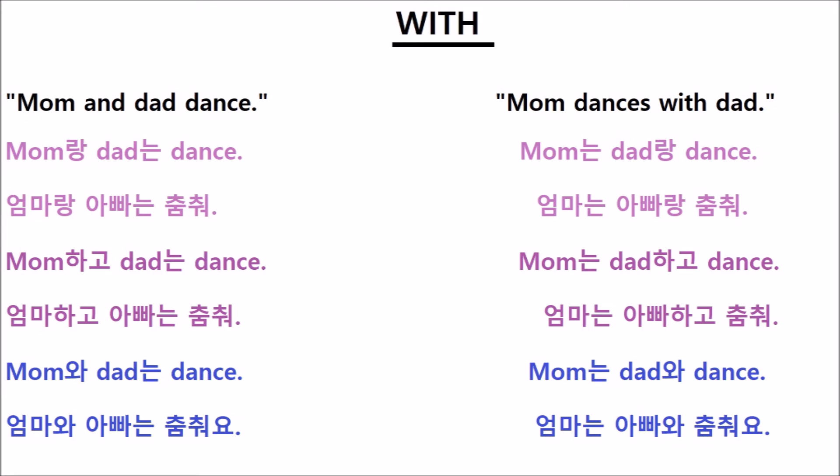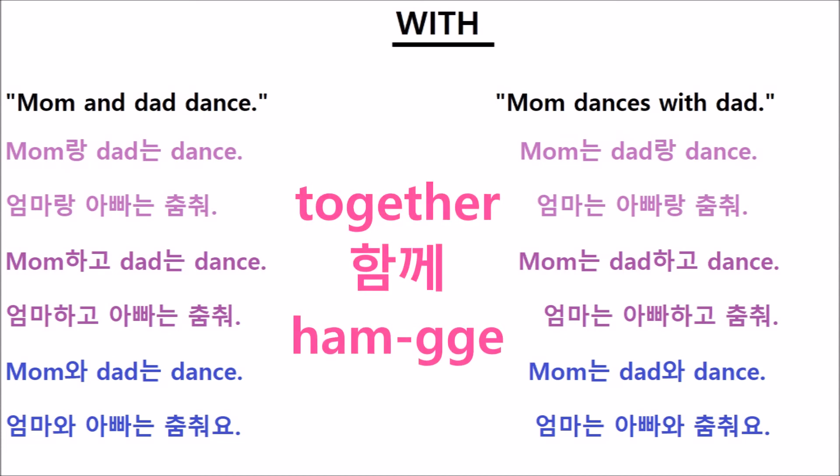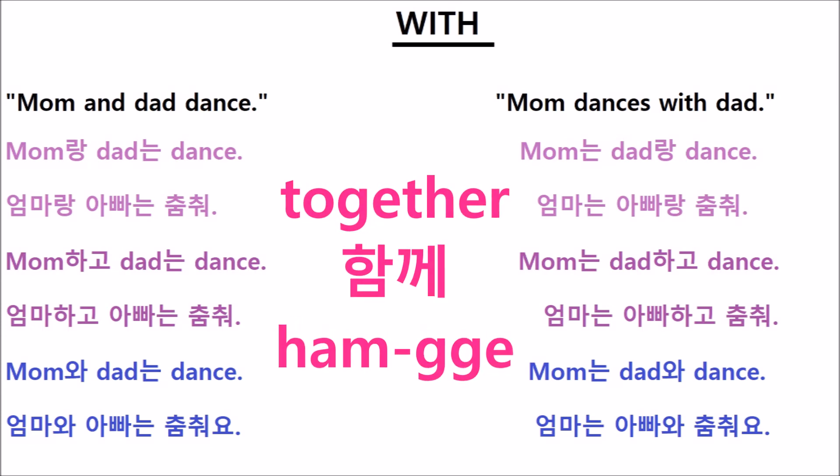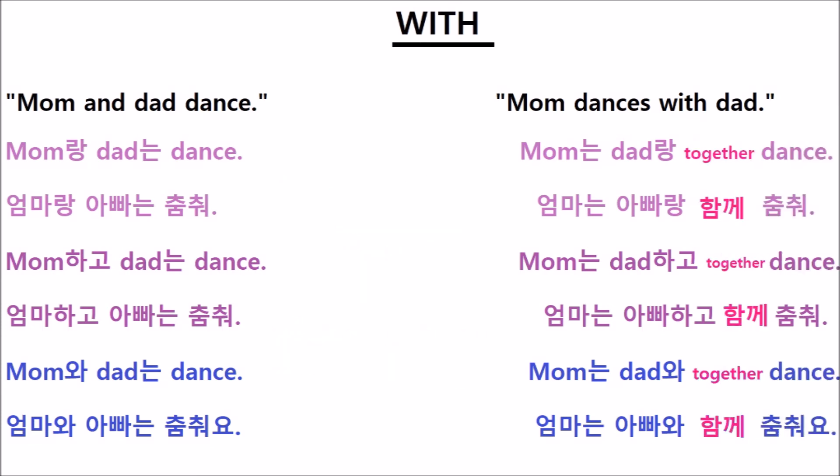And of course, we can make similar sentences with the other versions of 'with.' There's one more little thing that we need to add to the sentence to make it correct in Korean, and that is the word 'together' (함께, hamke). It fits right in between the 'with' and the verb: 엄마는 아빠랑 함께 춤 춰 (eomma-nun appa-rang hamke chum chwo).